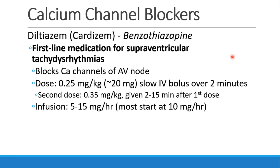The first class of drugs are the benzothiazepines, specifically diltiazem, also called Cardizem. This drug is a first-line medication for supraventricular tachydysrhythmias. For example, a patient in atrial fibrillation with a rapid ventricular rate — calcium channel blockers may help slow down their heart rate by blocking the calcium channels of the AV node, blocking conduction through the node and the ventricular response. A normal loading dose is 0.25 milligrams per kilogram, which is about 20 milligrams in most people.